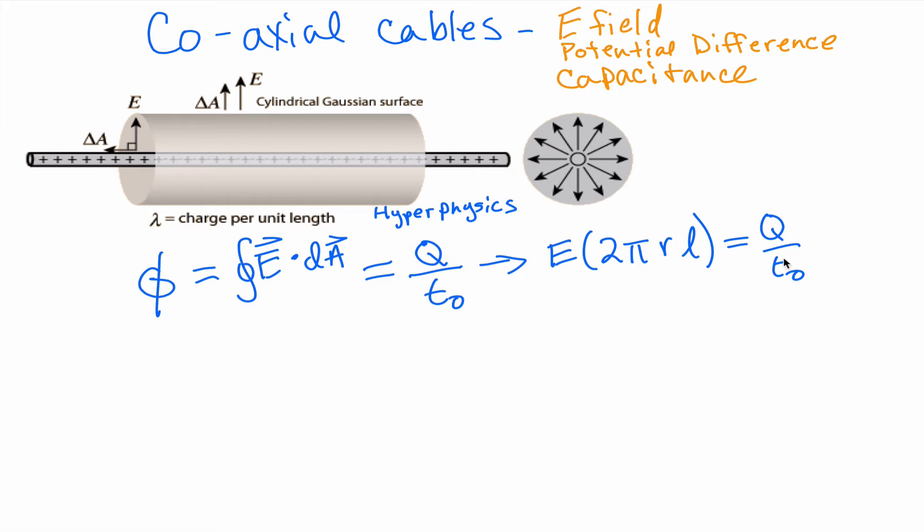So E times area is Q over epsilon naught. I would also like to add in a couple of constants here, or things that we often use when we talk about potential and E-field and capacitance and charge, and that's the definition of linear charge density. So lambda here is Q over L. I throw that in there because I can rearrange this expression to be E equals 1 over 2 pi epsilon naught. You'll notice this is almost K, the Coulomb's constant that we've used before.